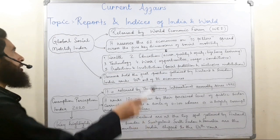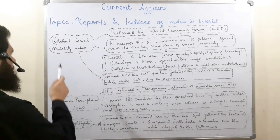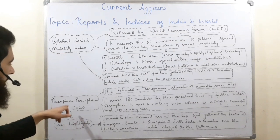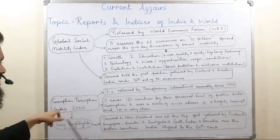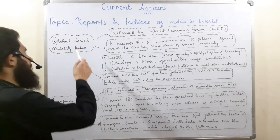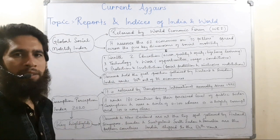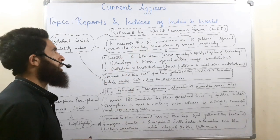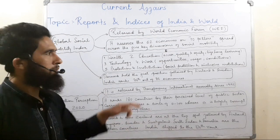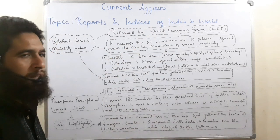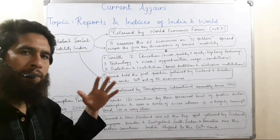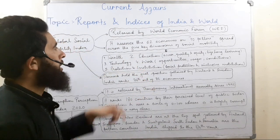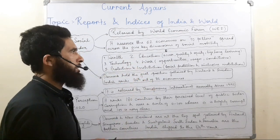Now we discuss the remaining two indices: the Global Social Mobility Index and the Corruption Perception Index. The Global Social Mobility Index is released by the World Economic Forum and it assesses 62 economies on 10 pillars spread across 5 dimensions.